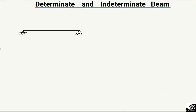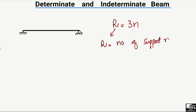Here I take a simple example — a simply supported beam — to explain the determinacy of the beam. There is a formula: r is equal to 3n. This formula is used to find out the determinacy of the beam, where r is the number of support reactions, 3 is a constant value, and n is the number of members.